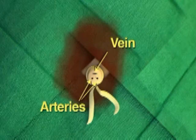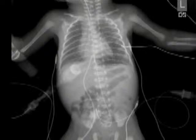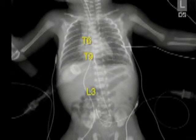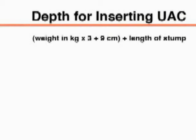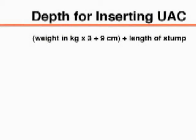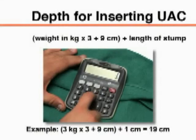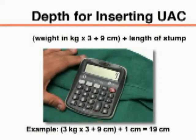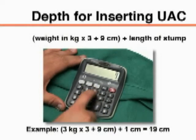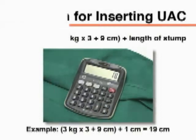You must then decide how deeply to place each line. The umbilical artery catheter, or UAC, can be placed in a high-lying position between thoracic vertebra number 6 and 9, or in a low-lying position below the third lumbar vertebral body. To calculate the depth for inserting a high-lying UAC, multiply the weight in kilograms by 3 and add 9 centimeters, then measure and add the length of the stump to this value.